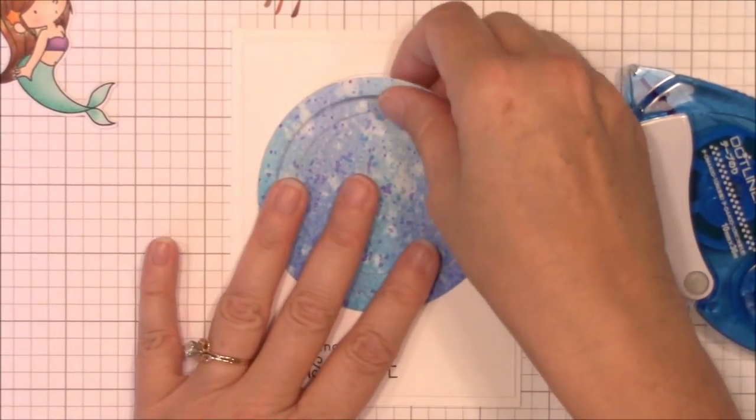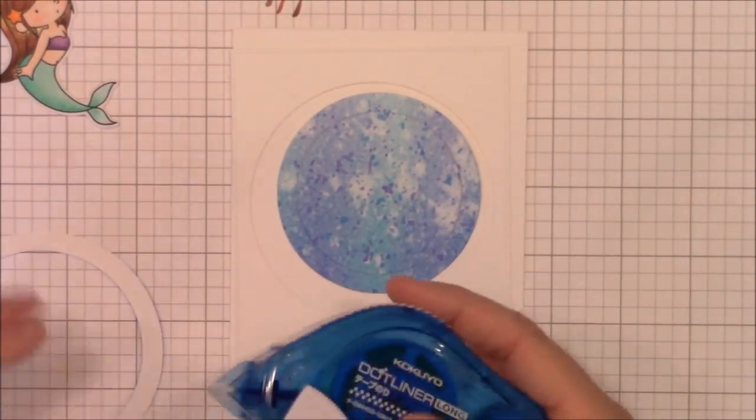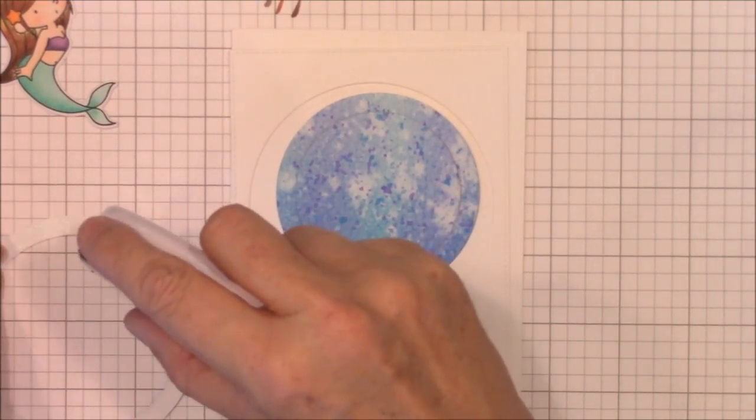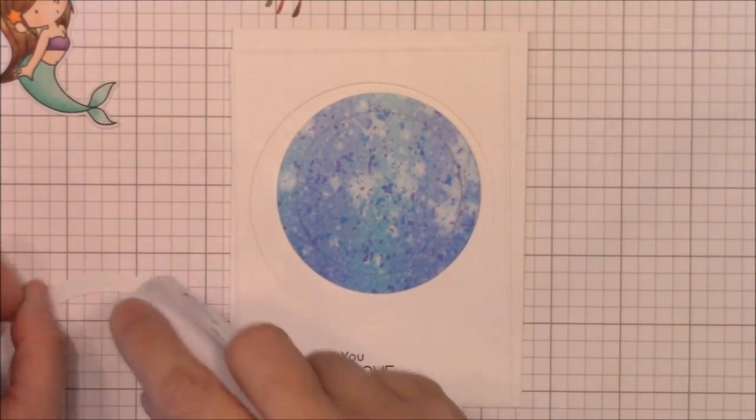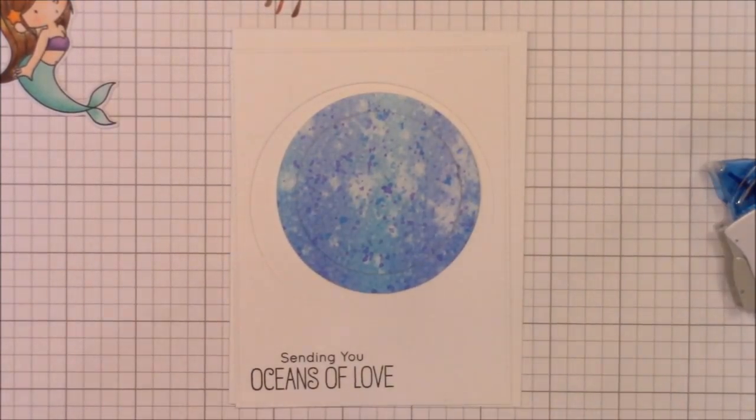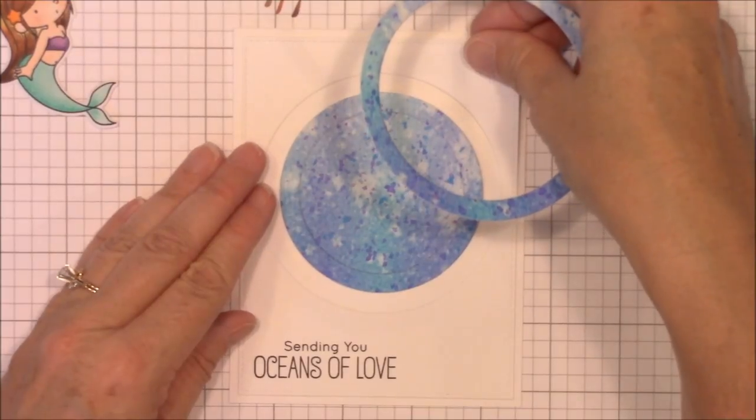Now that I've finished coloring my images it's finally time to start assembling our card. I've placed the image panel onto a four and a quarter by 11 inch smooth white card base that's been scored and folded in half. The temporary position of the image panel will help me align the slider track and shaker pocket.